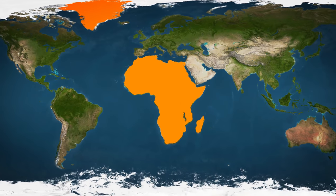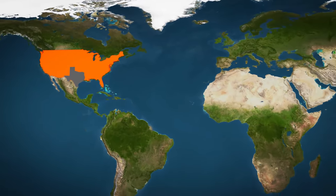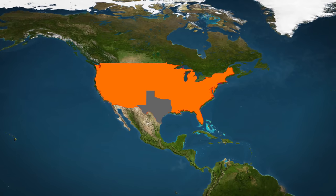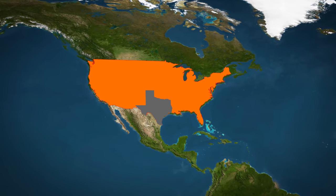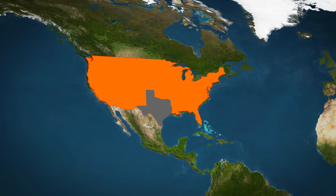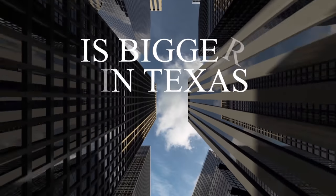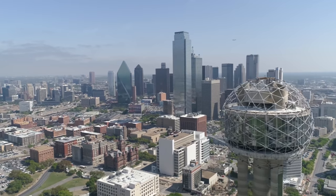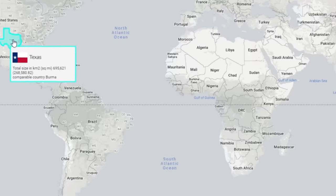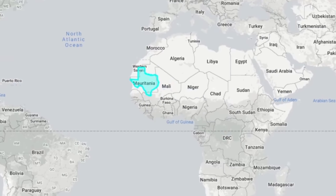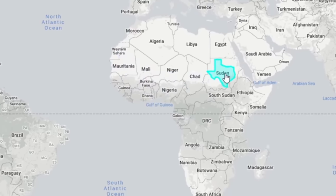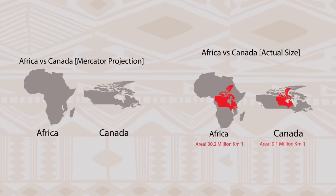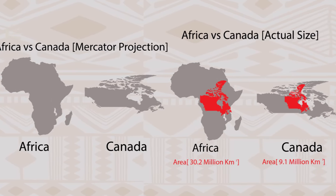Although Texas is one of the most prominent American states — smaller than Alaska but bigger than California — it may surprise you that Texas is much smaller than some not-so-well-known African countries. The saying that everything is bigger in Texas likely originated as a reference to the enormity of the state's geographical area. A relatively unknown West African nation like Mauritania is, however, bigger than Texas. Sudan is bigger, and the Democratic Republic of Congo is also larger.